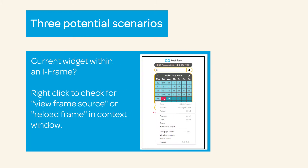You may be using the current widget but within an iframe. An easy way to check is to right-click anywhere on the widget itself. If it is in an iframe, the bottom part of the context menu should show two additional options: view frame source and reload frame.